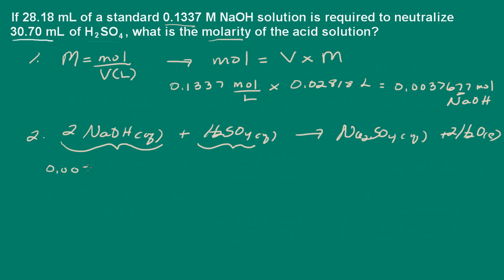We have 0.0037677 moles of sodium hydroxide. From our balanced chemical equation, we know that one mole of sulfuric acid reacts with two moles of sodium hydroxide. So this gives us 0.001838 moles of sulfuric acid.